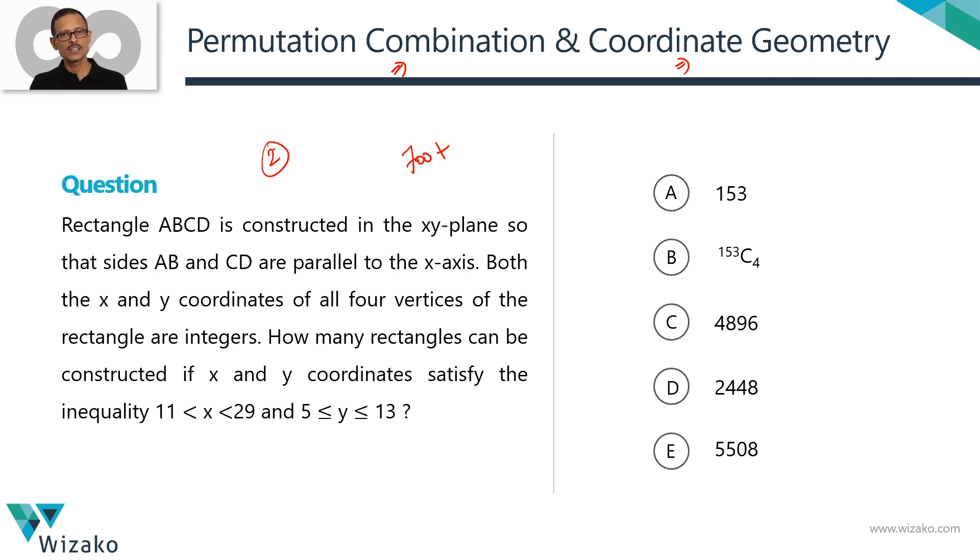So two points given: which two sides are parallel to X axis and the fact that the X and Y coordinates of all four vertices need to be integers. How many rectangles can be constructed if X and Y coordinates satisfy these two inequalities? X lies in the open interval 11 to 29, Y lies in the closed interval 5 to 13. Just make a note of these little things so you don't get things wrong. Let's get started.